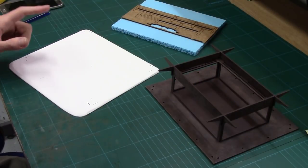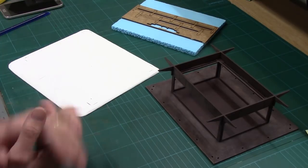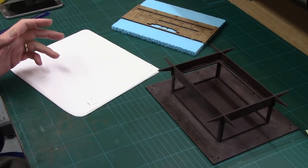Next up, base it. Basing not only provides a protective rim around your model, but it gives you an opportunity to texture, paint and flock the piece up to tie it into the rest of your scenery pieces, your board and your army.